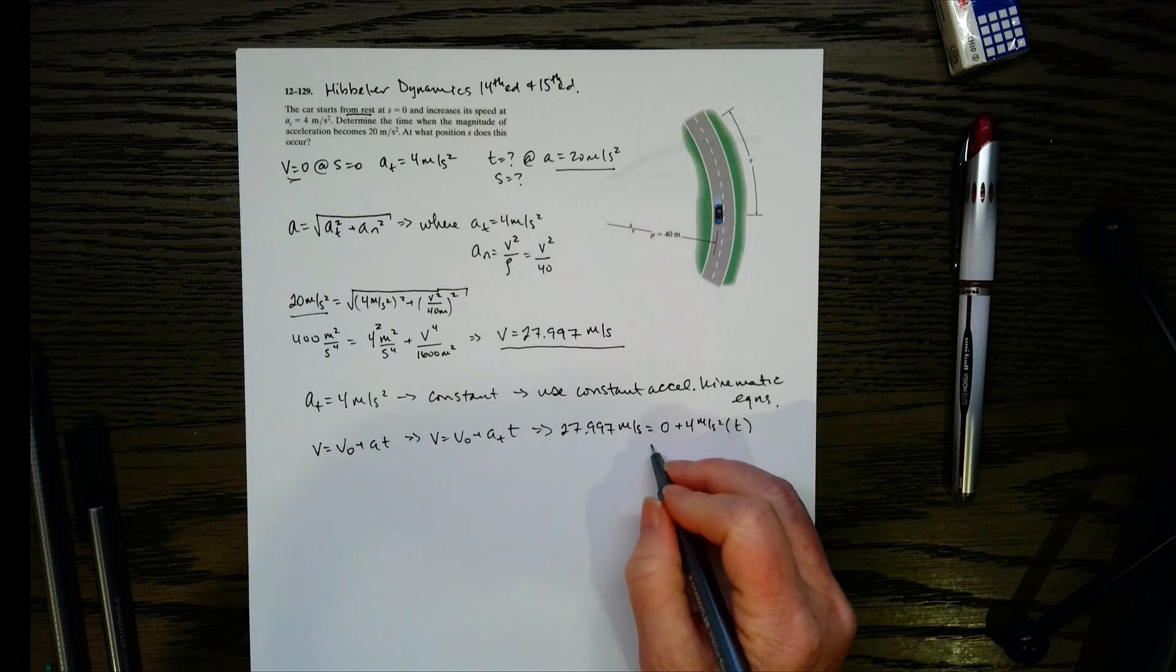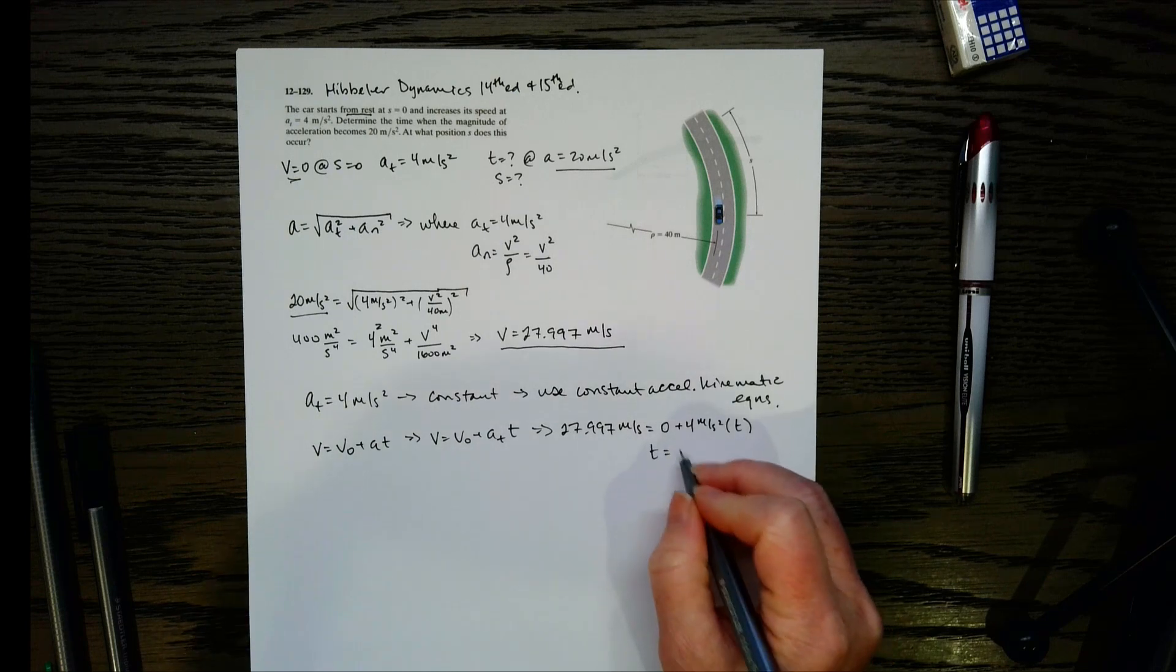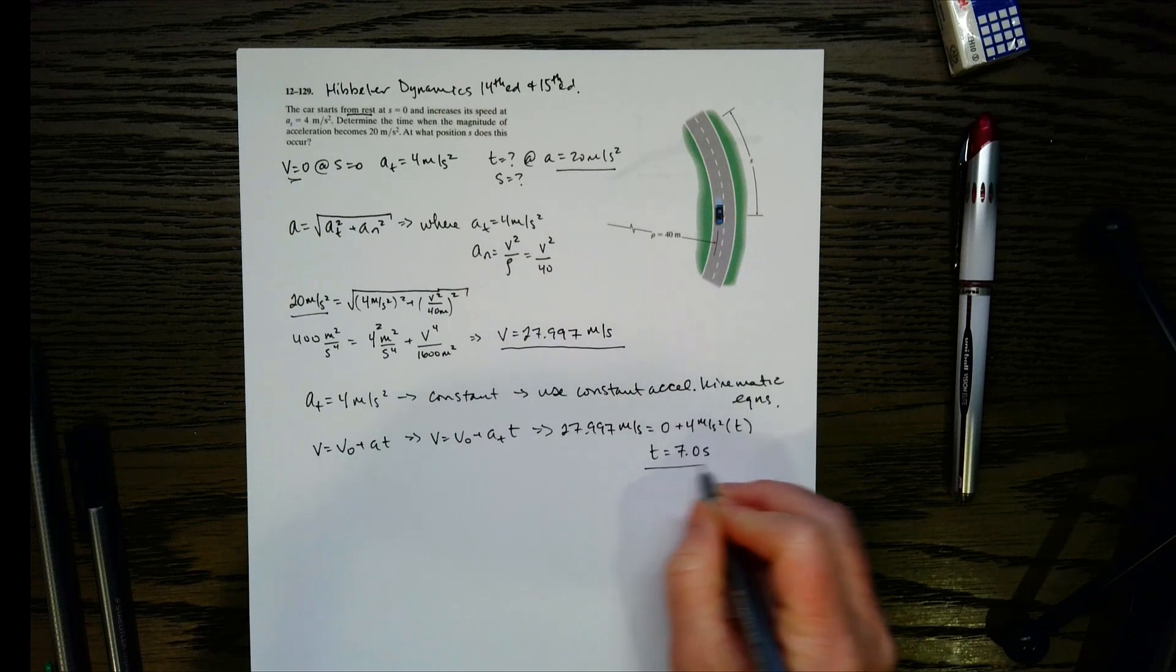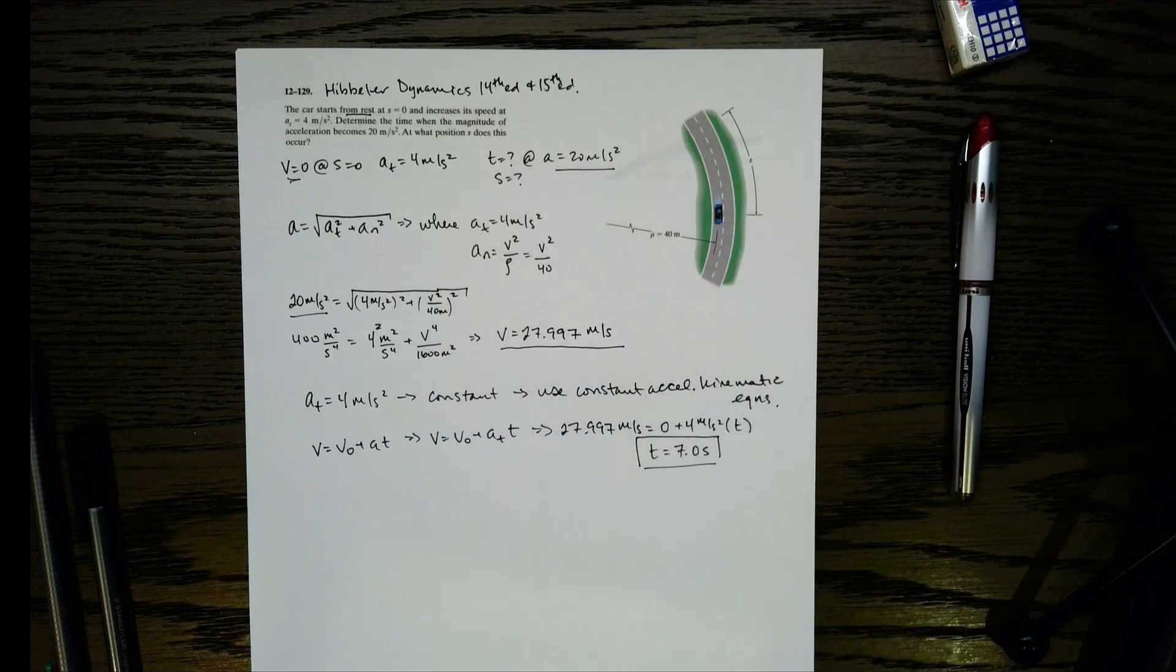So final velocity, 27.997 meters per second. Initial velocity was 0 because we started at rest. And then we have our acceleration, which is the tangential term. It was increasing speed, so it's positive, and then we've got t. So now when we solve, we get 7.0 seconds. So there's our time.